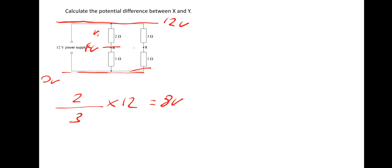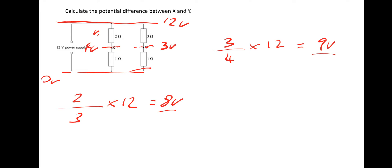For point Y, we find the voltage drop across the 3-ohm resistor: 3 divided by 4 (total on that arm) times 12 = 9 volts. So the potential at Y is 12 minus 9 = 3 volts. The potential difference between X and Y is simply 4 minus 3 = 1 volt.